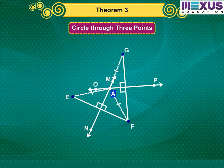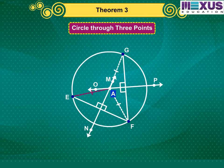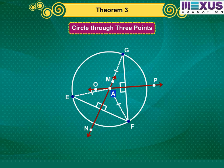So, if we draw a circle with center A and radius AE, it will also pass through F and G. This shows that there is a circle passing through the three points E, F and G. We know that two lines that are perpendicular bisectors can intersect at only one point. So, we can draw only one circle with radius AE. In other words, there is a unique circle passing through E, F and G.